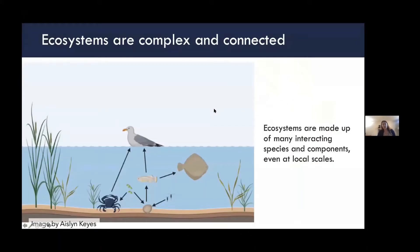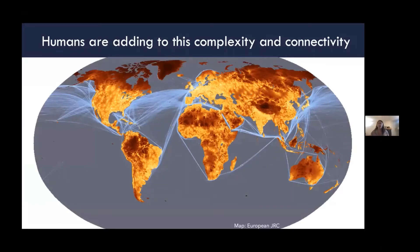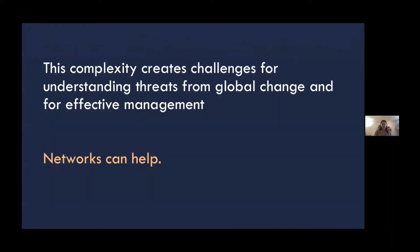We know that ecosystems are complex and connected, even at really local scales. This is a simplification of a coastal ecosystem and the species interactions and components within it. These local ecosystems are embedded in larger systems that are increasingly connected by humans. This map shows just how connected our planet is, where the light colors show places only within one day of travel time to major urban areas, and the blue lines highlight transportation and shipping routes.